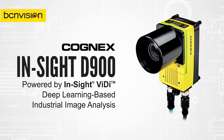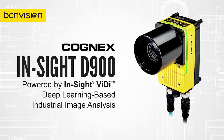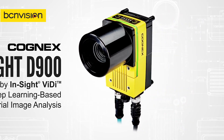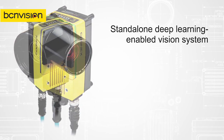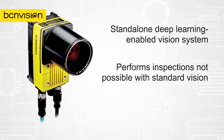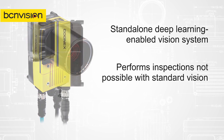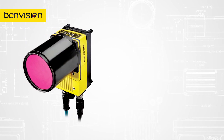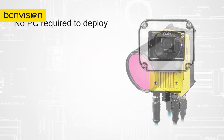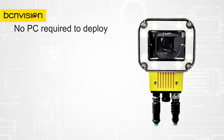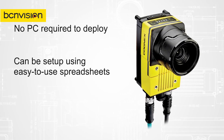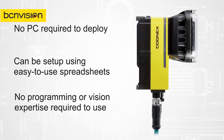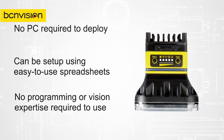The Insight D900 is a standalone vision system running Insight Vidi software designed specifically to run deep learning applications. This embedded solution easily solves applications too difficult to program with traditional rule-based machine vision tools and provides reliable, fast, and consistent results not possible with human inspection. Applications are deployed on the Insight D900 smart camera without the need for a PC. Using the familiar and easy-to-use Insight spreadsheet interface, it helps simplify application development and factory integration, making deep learning technology accessible to non-programmers.